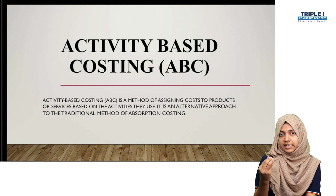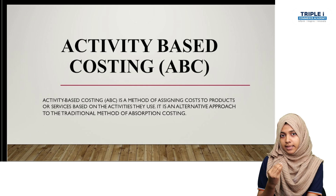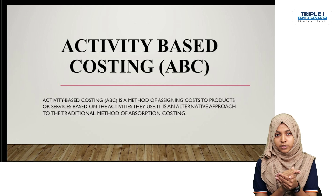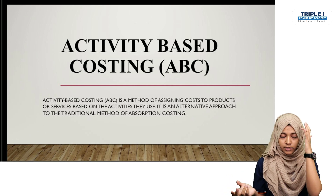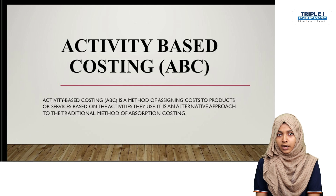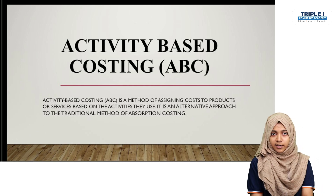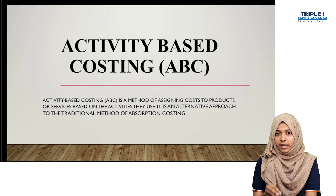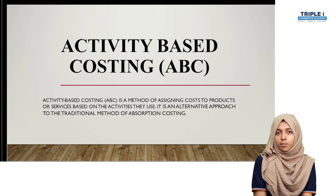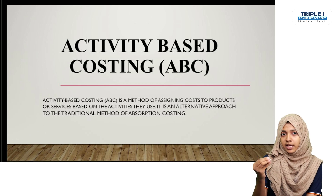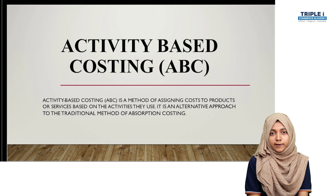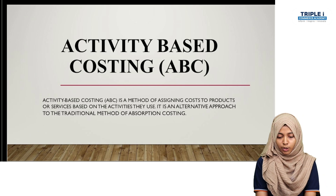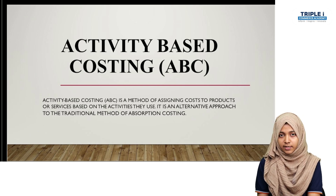We divide the cost based on how much supervision each product uses. For example, if product A needs 5 supervisions and product B needs 2 supervisions, then out of 7 total supervisions, we divide the cost accordingly — 5 parts to A and 2 parts to B — based on how much activity each product consumes. This is activity based costing: a method of assigning costs to products or services based on the activities they use.